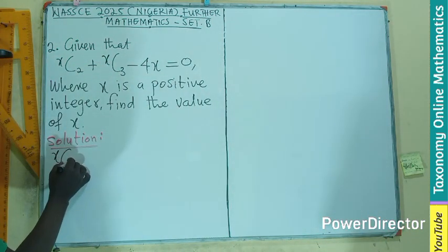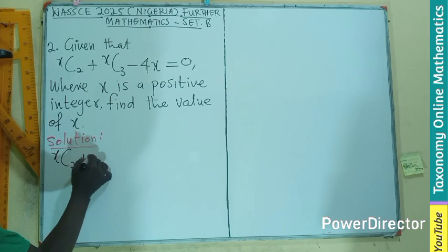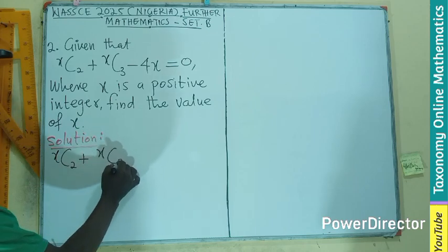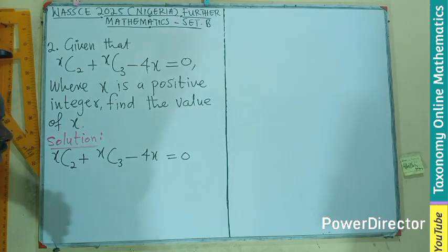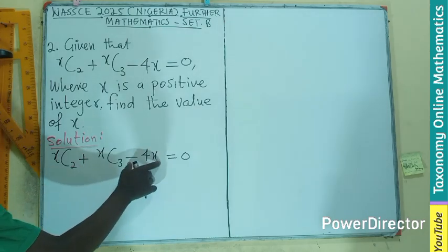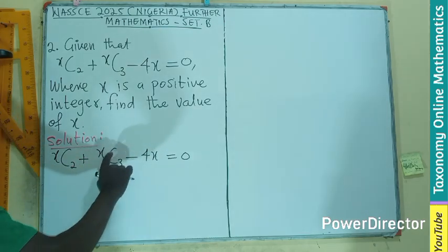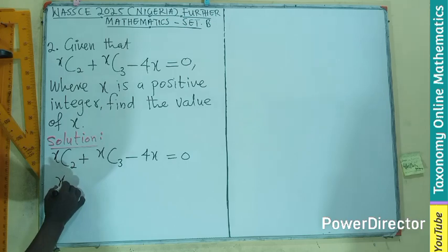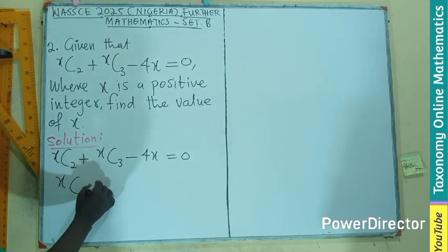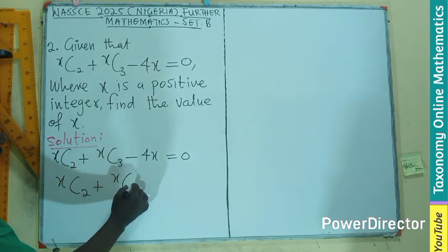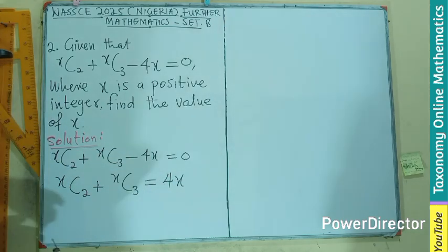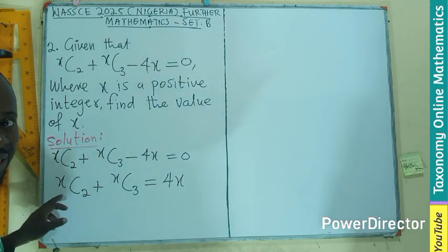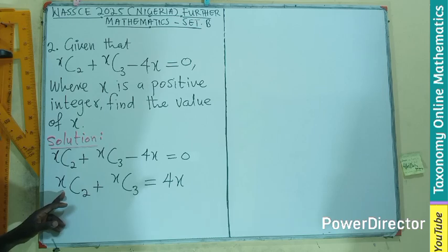This is x C_2, x C_3 minus 4x equals 0. Let's transpose this term that is not making of the combination to the other side, making x combination 2 plus x combination 3 to be equals 4x. Now, let's follow by the definition of a combination.